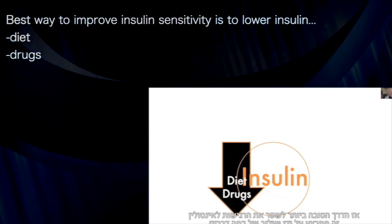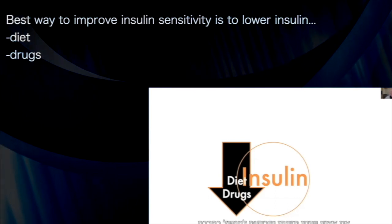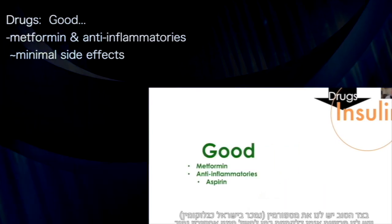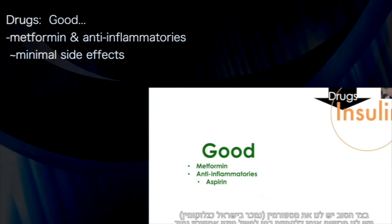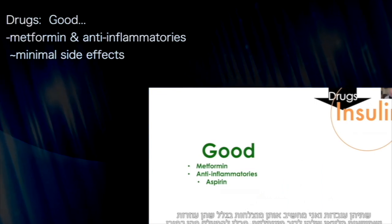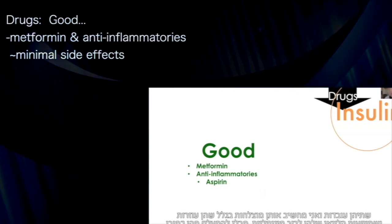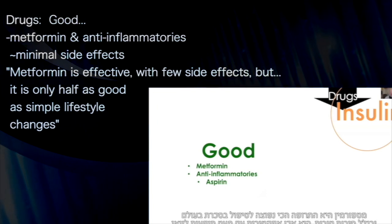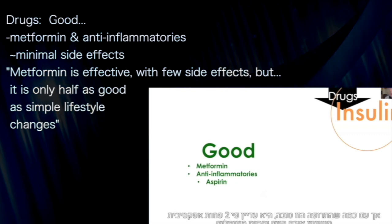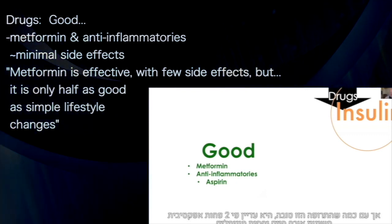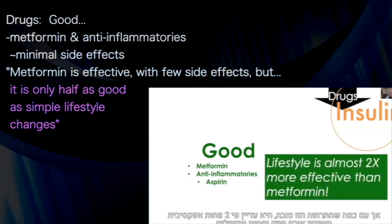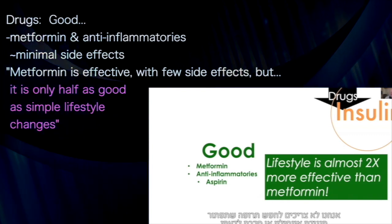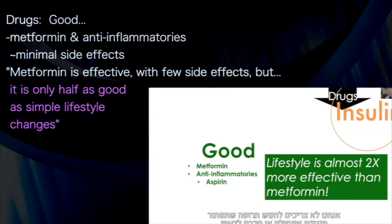That is done through a mix of things — I'll emphasize dietary interventions and anti-diabetic drugs. On the good side, we have metformin and anti-inflammatory medications like low-dose aspirin. Both work with generally minimal side effects. Metformin is the most widely used anti-diabetic drug in the world and for good reason — it is effective. But as good as this drug is, it is still only half as effective as even modest lifestyle strategies. We should never look to a drug alone to solve insulin resistance or type 2 diabetes.